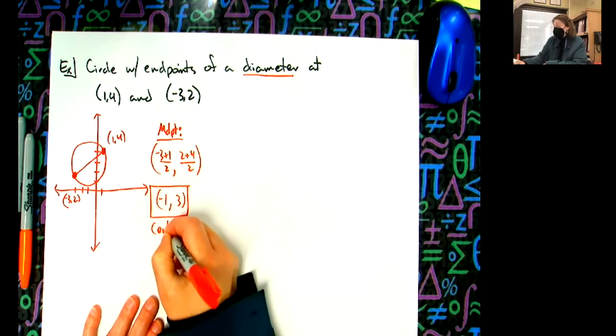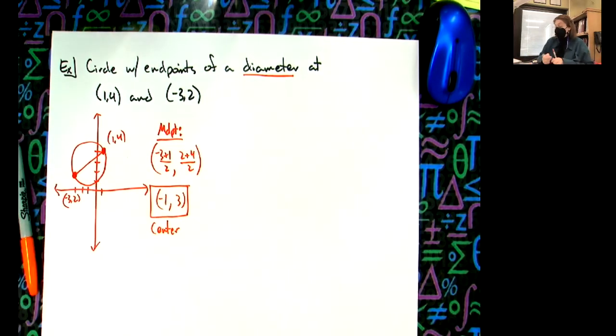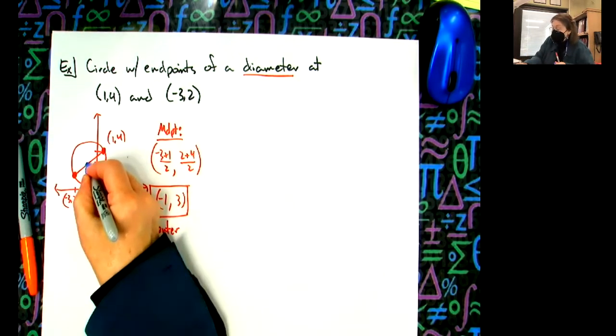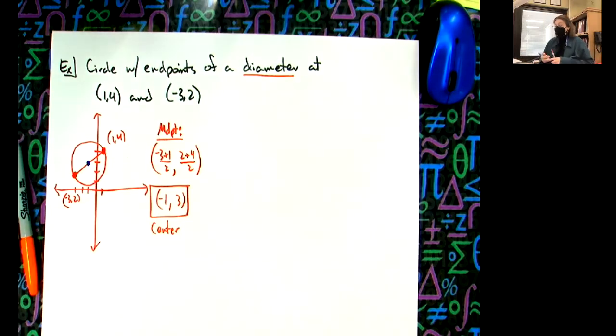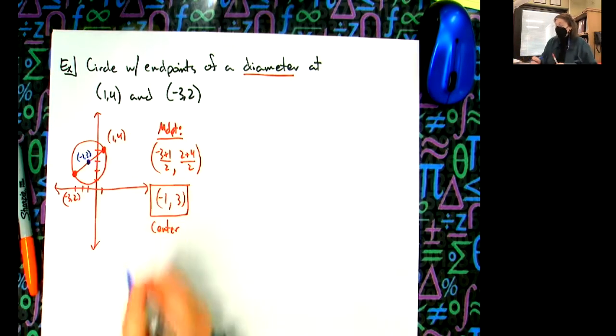So now I know my center. Now I need to know the radius. Let's go ahead and add the center in, so (-1,3). Oh hey, not being on graph paper I did pretty good there. So (-1,3).